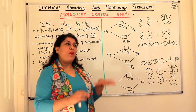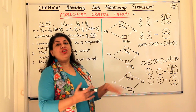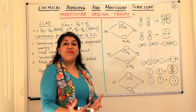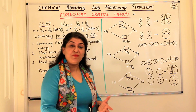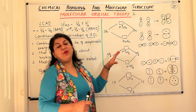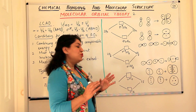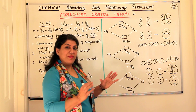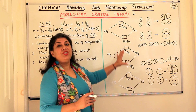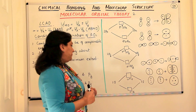And once you know the sequence of the energy levels, just like you did the electronic configuration in atoms, you do the same in molecules—and it becomes very easy. But before we come to the energy level diagram, let us understand the shapes of these orbitals that are formed.